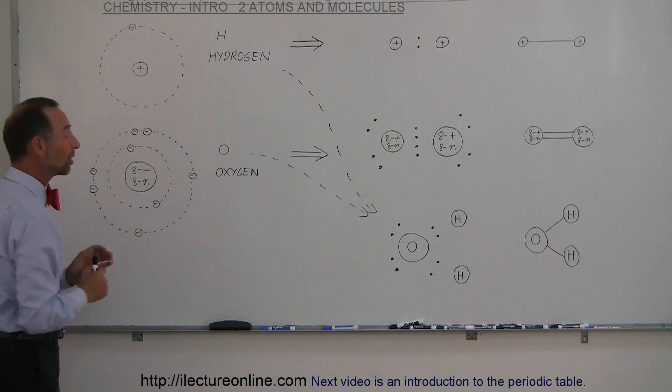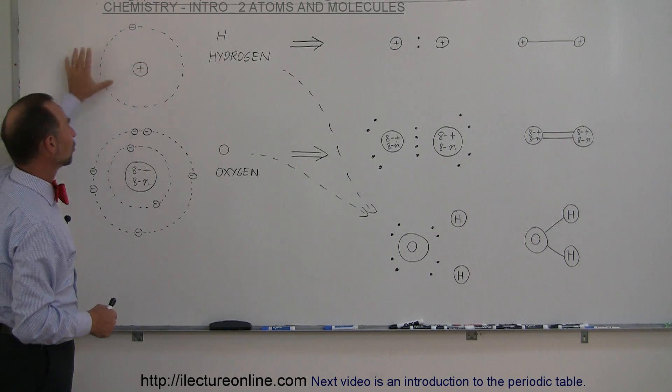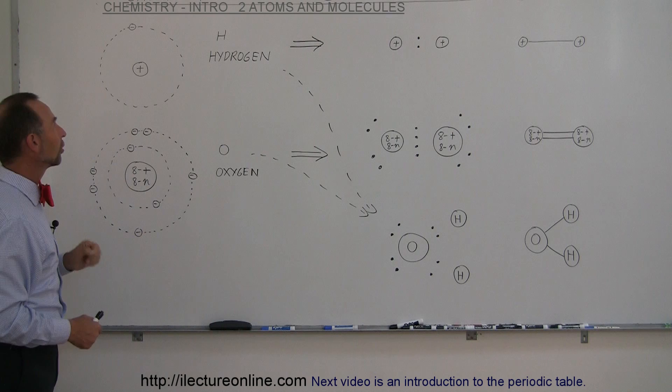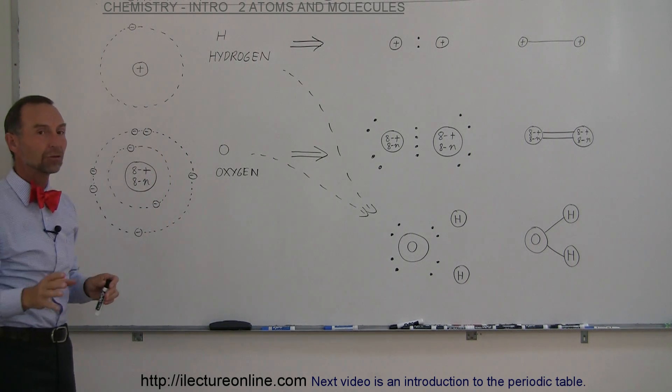Here's the nucleus, and it turns out for an atom, the number of electrons we have in the atom, which typically circle around the nucleus, will be equal to the number of protons in the nucleus. Since hydrogen only has a single proton, it will therefore only have a single electron.